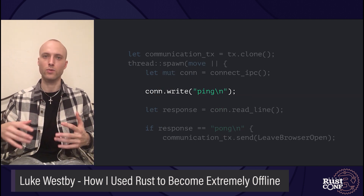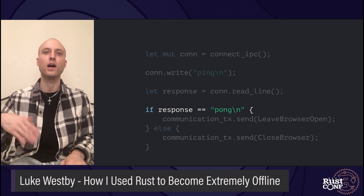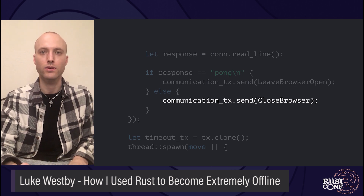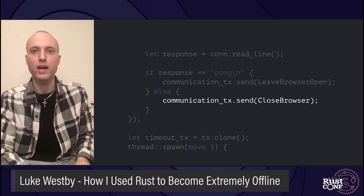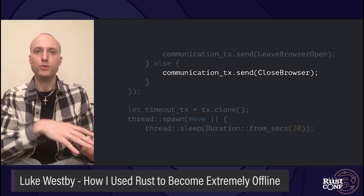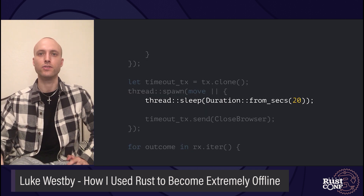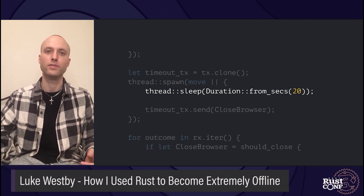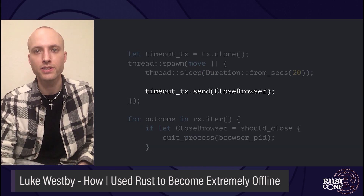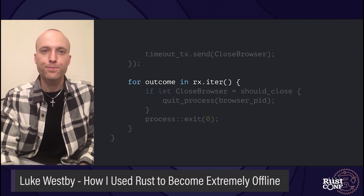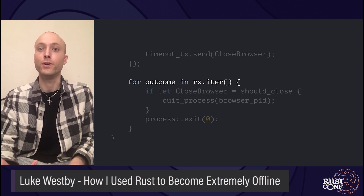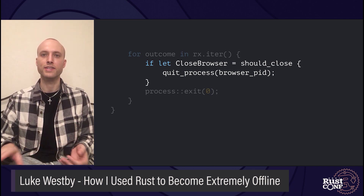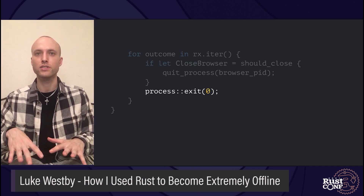Channels are good for this because you can clone the sender, move it into a closure, and coordinate between threads. First, we set up communication with the native messaging host, kick off the thread, and connect to the host over IPC (interprocess communication). We send a message that says ping, wait for a response, and if we get pong back, we're all good — we tell the channel we don't want to close the browser. If anything else comes back — malformed or unrecognized input — we tell the program to close the browser. At the same time, we start another thread and immediately suspend it for 20 seconds. If that 20 seconds elapses without a response from the native messaging host, we push an outcome onto the channel to close the browser because it's timed out. Then we wait for something to appear on the channel, and if we're told to close the browser, we use the PID we got earlier to shut it down. Either way, the daemon's work is finished and we exit.